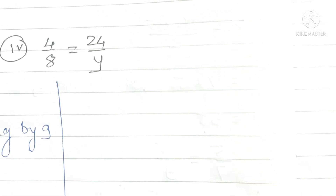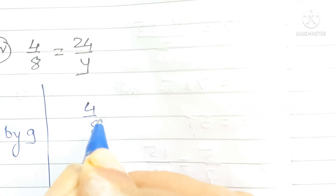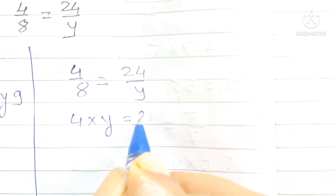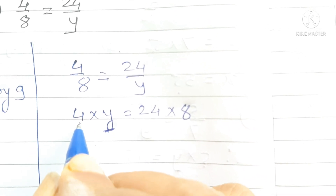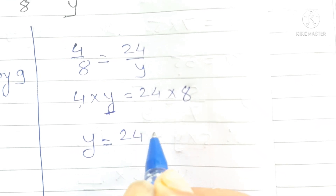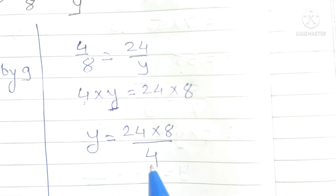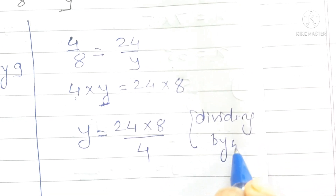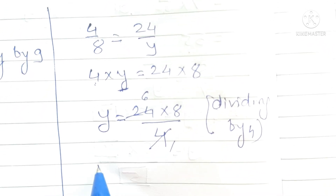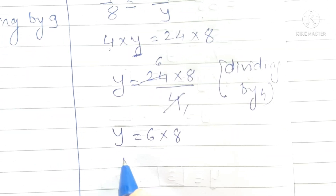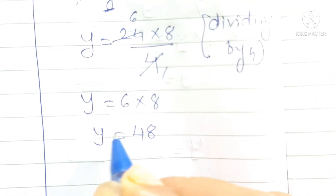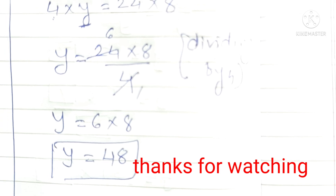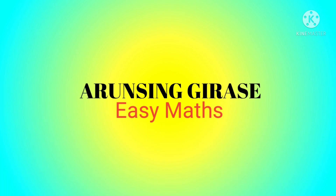4 by 8 is equal to 24 by y. Cross multiplication: 4 into y equals 24 into 8. So y is equal to 24 into 8 divided by 4. Dividing by 4: y is equal to 6 into 8, which is 48. Our answer is y is equal to 48. Thank you, friends. Goodbye, take care.